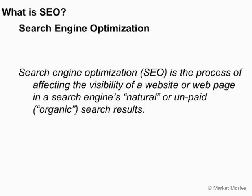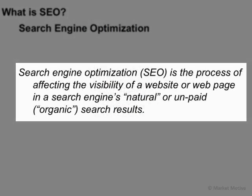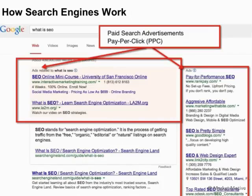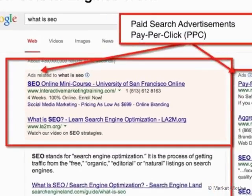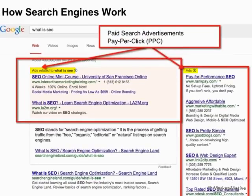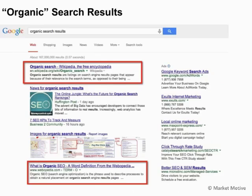So what is search engine optimization? It's the process of affecting your website or webpage to impact the visibility in the search engine's natural or unpaid organic search results. If you do a search for something like SEO, you'll get some results. You'll see ads to the top and to the right, labeled as paid. These are the paid search results. The organic search results are those not impacted or influenced by paid results — they're the organic search results.